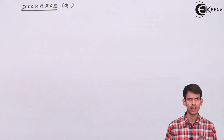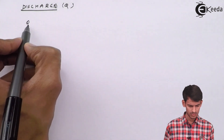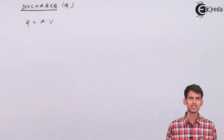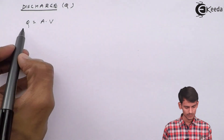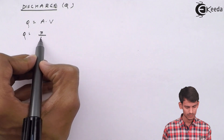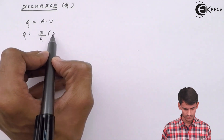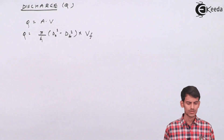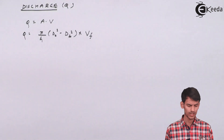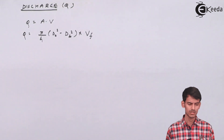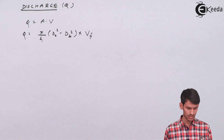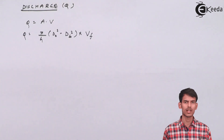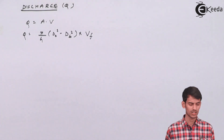The discharge to the runner can be easily calculated. Q equals area times velocity. The area available for flow of water is π/4 × (D0² − Db²), where D0 is the outer diameter of the impeller and Db is the diameter of the hub. You calculate the area from the difference in the squared diameters, and multiplying by velocity gives you the discharge.